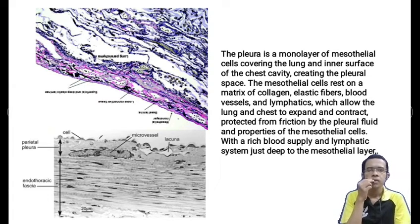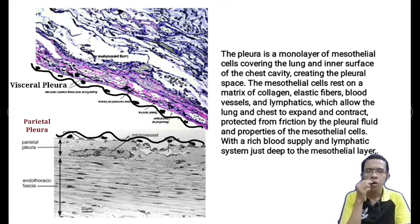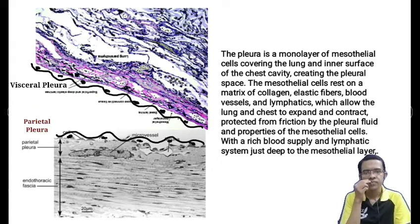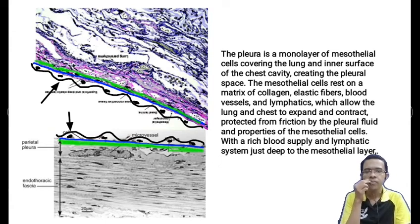We will now see the histology of the pleura. Each pleura is a serous membrane — specifically a monolayer of mesothelial cells. A layer of squamous epithelium sits upon a matrix of collagen, elastic fibers, blood vessels, and lymphatics. So basically the pleura is made up of a monolayer of squamous epithelial cells which sits on a basement membrane, and this basement membrane rests on a matrix of collagen, elastic fibers, blood vessels, and lymphatics.